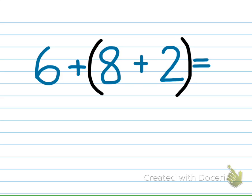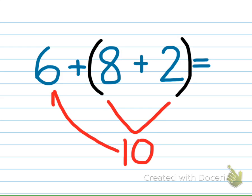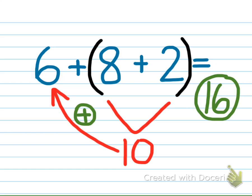To solve this problem, you first find the sum of 8 plus 2 because they are inside the parentheses. 8 plus 2 equals 10. Then you add 10 to the 6 to get a total of 16.